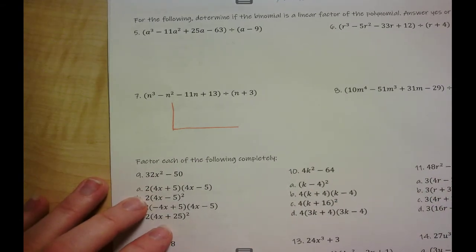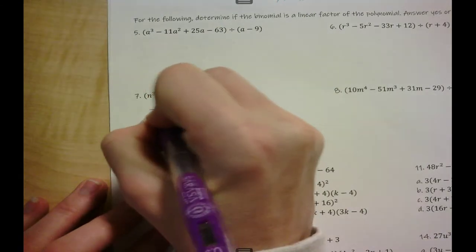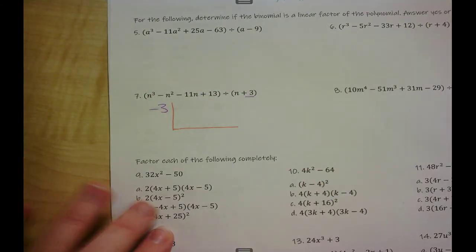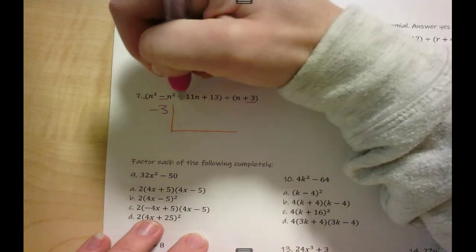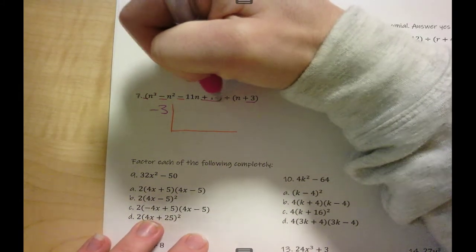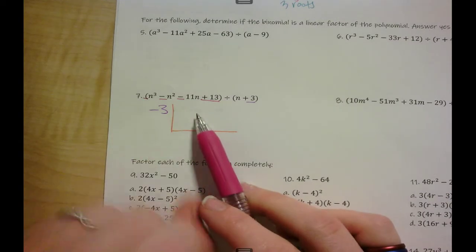I'm putting this number on the outside but I'm changing the sign, so negative three. Then the numbers in front are going to go up top. Remember two things.